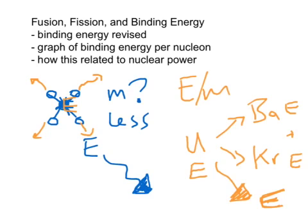So binding energy takes this idea of, we didn't talk about it before, but there's a mass deficit, that's what that missing mass is. We call it a mass deficit.